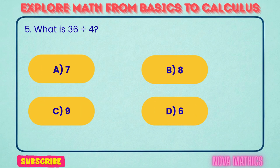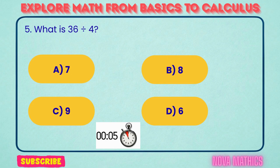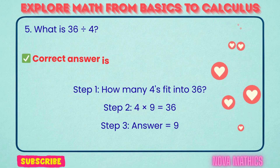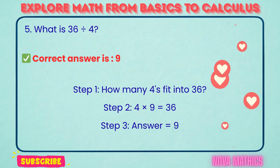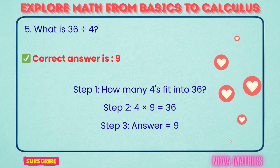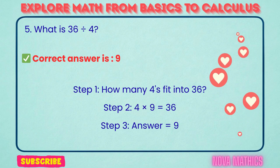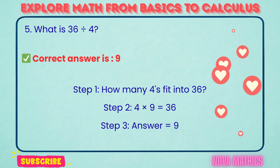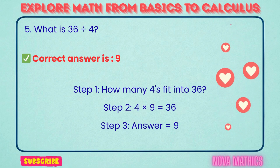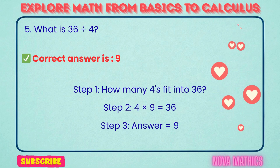5. What is 36 divided by 4? Correct answer is 9. 36 divided by 4 equals 9. We find this because 4 times 9 is 36.